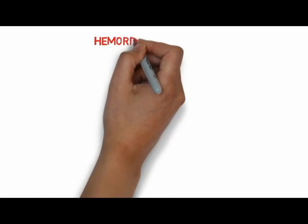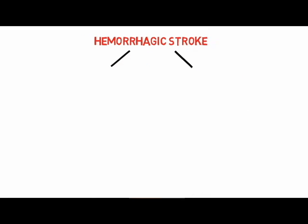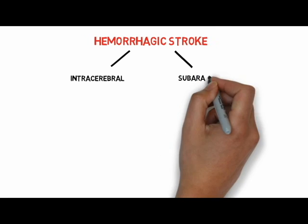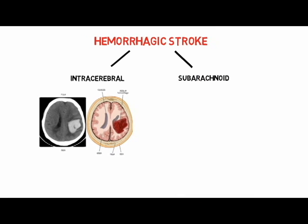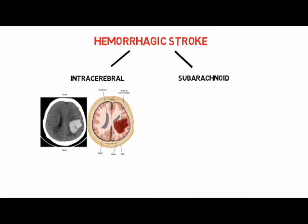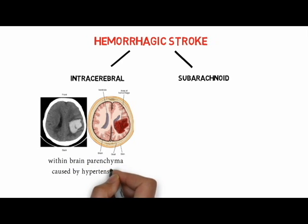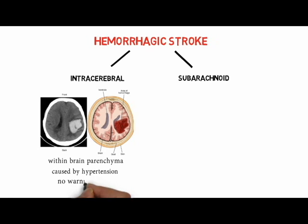Hemorrhagic strokes can be classified into either intracerebral hemorrhage or subarachnoid hemorrhage. In intracerebral hemorrhage, bleeding occurs from blood vessels within the brain parenchyma. It is usually caused by hypertension — that is, high blood pressure. The bleeding occurs suddenly and rapidly, and there are usually no warning signs.